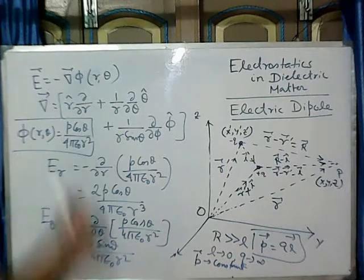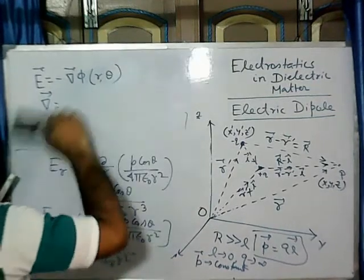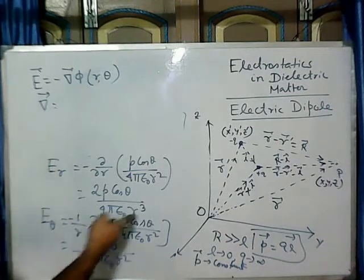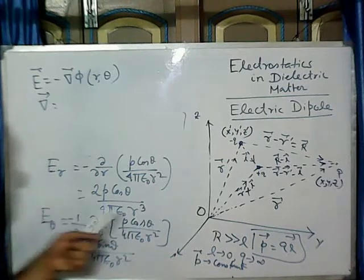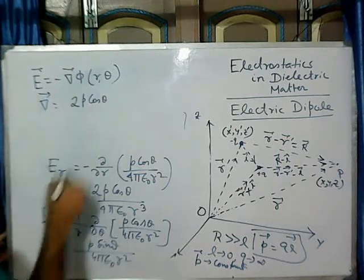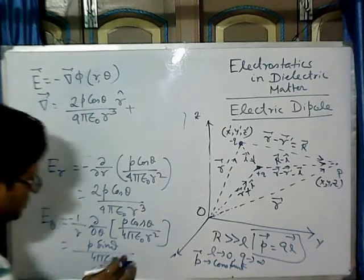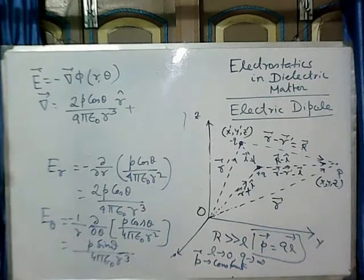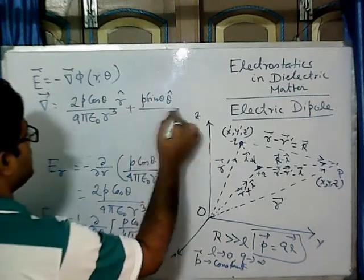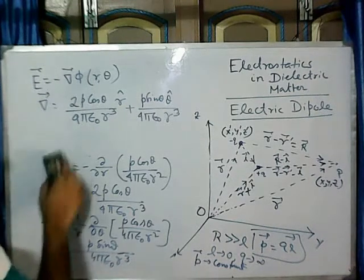So the general form in spherical polar coordinates: we know the potential is varying with R squared. And here you can see the electric field along the R direction is varying with R cubed. In vector form: E equals 2 P cos theta by 4π epsilon naught R cubed times R hat, plus P sin theta by 4π epsilon naught R cubed times theta hat. This is the form of the electric field.